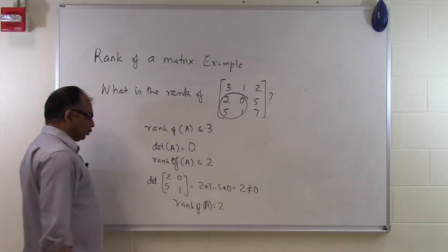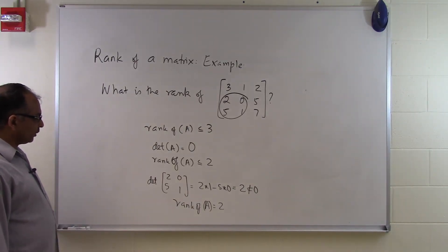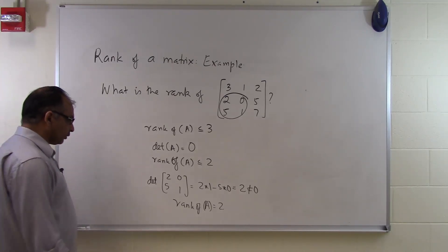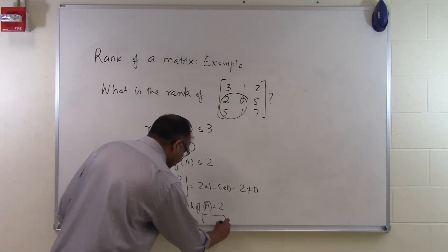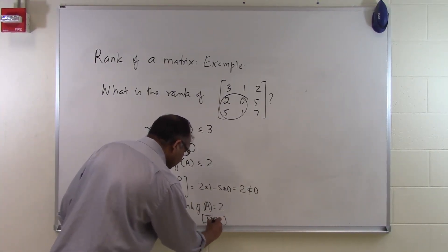I don't have to look at other submatrices which are of order 2x2 because I have been able to find at least one submatrix which is of order 2x2 for which the determinant is not equal to 0. And that is the end of this segment.